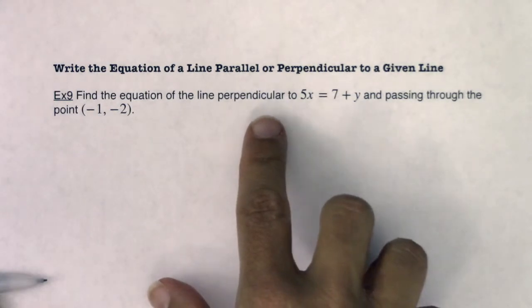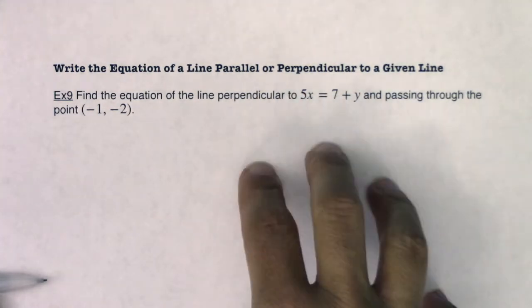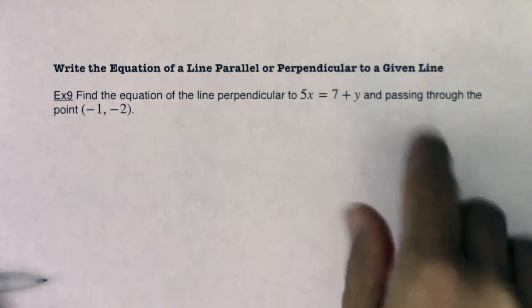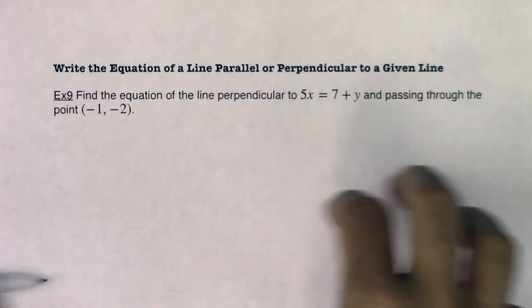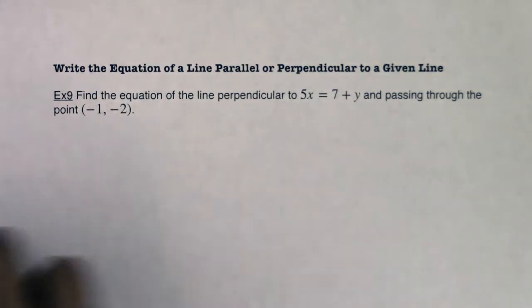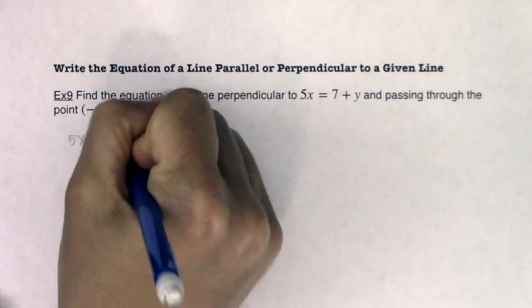I want to find the equation of a line perpendicular to this line and I remember that perpendicular lines have slopes that are opposite reciprocals of each other. So I need to find the slope of this line and then figure out what the opposite reciprocal to that number would be. So let me focus on this line for right now. We've got 5x equaling 7 plus y.